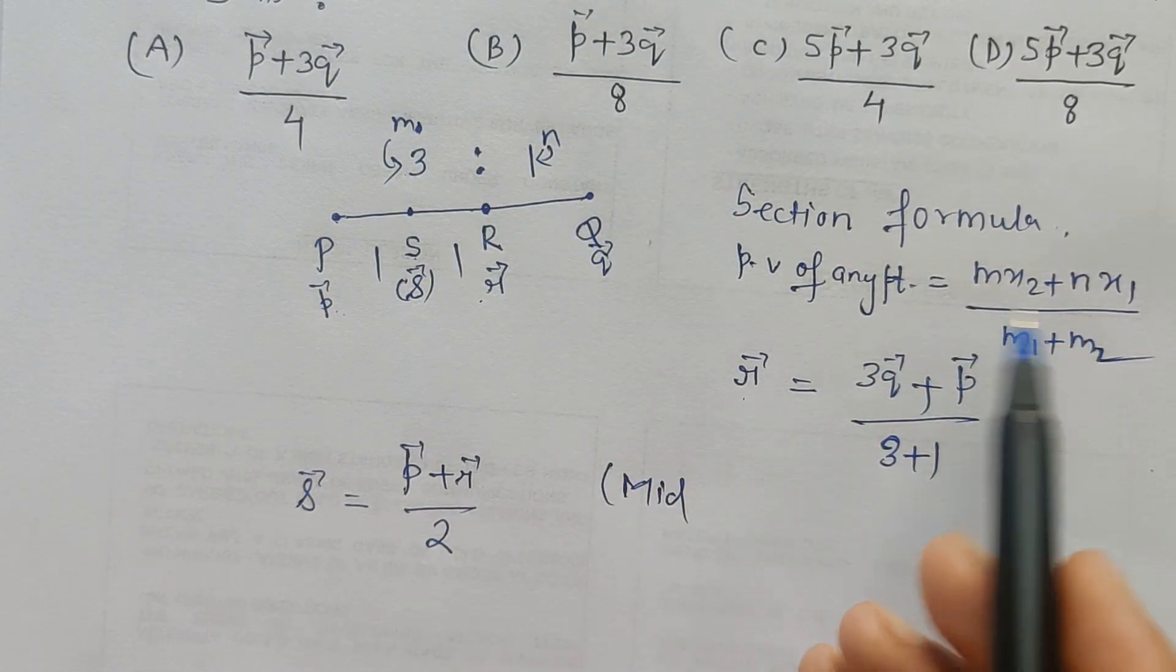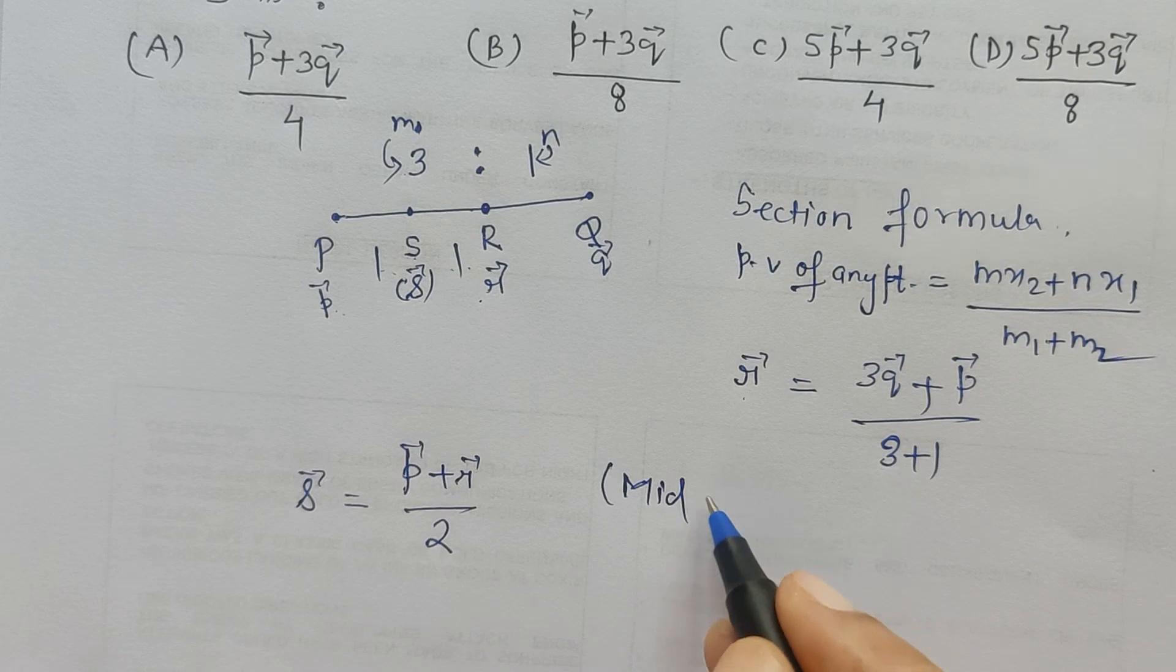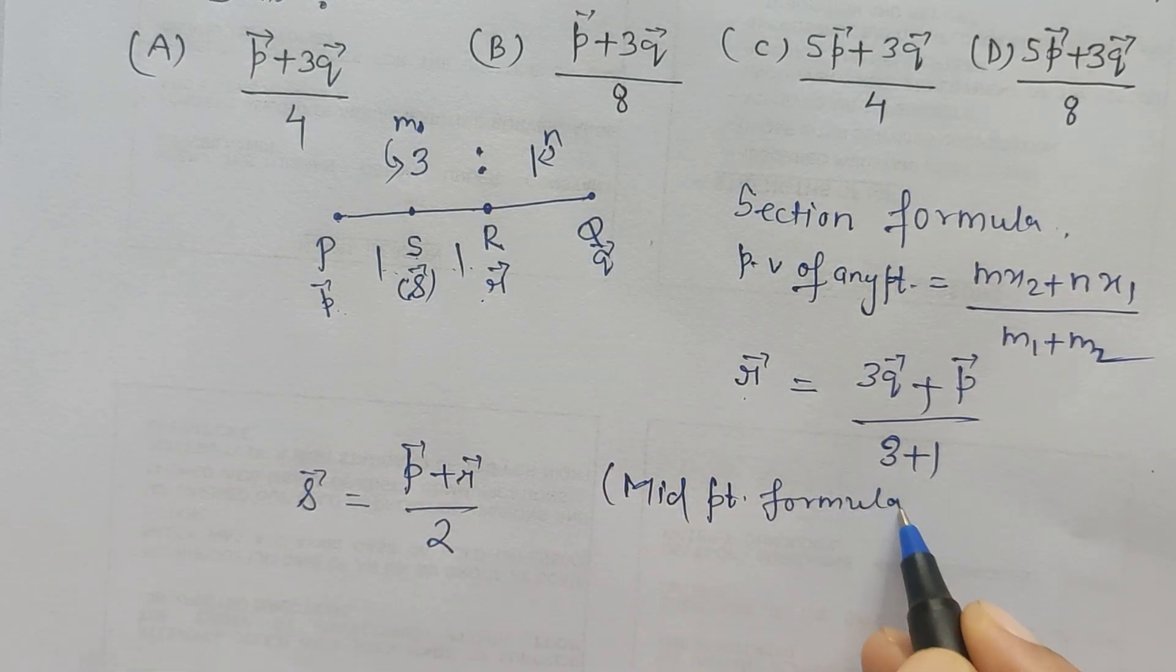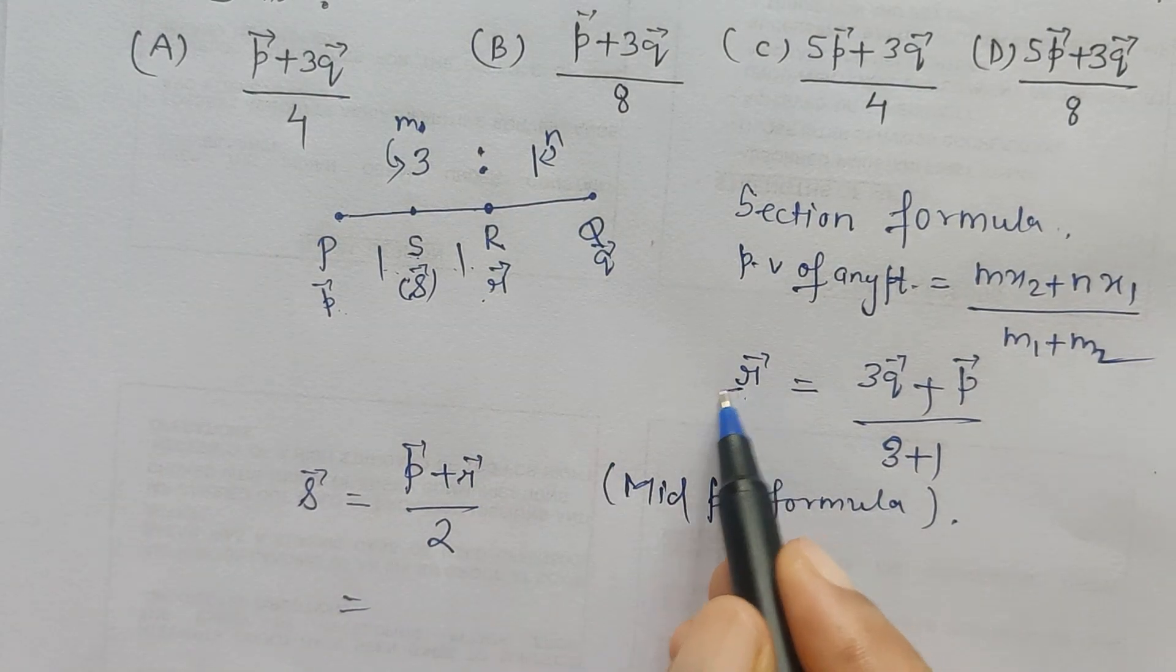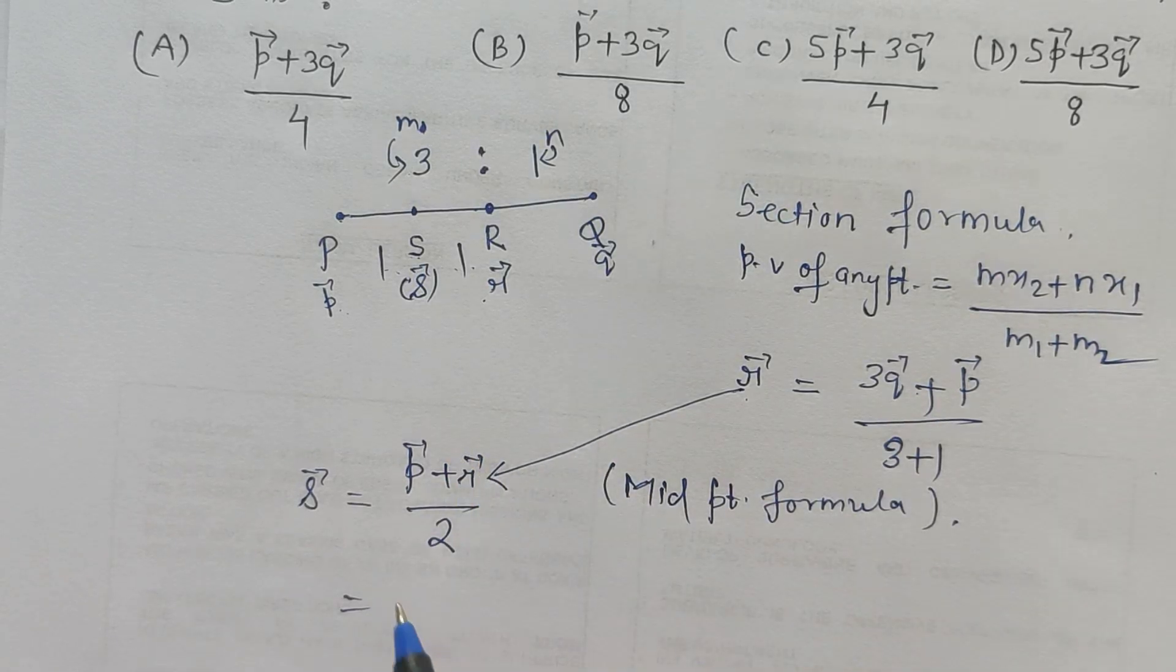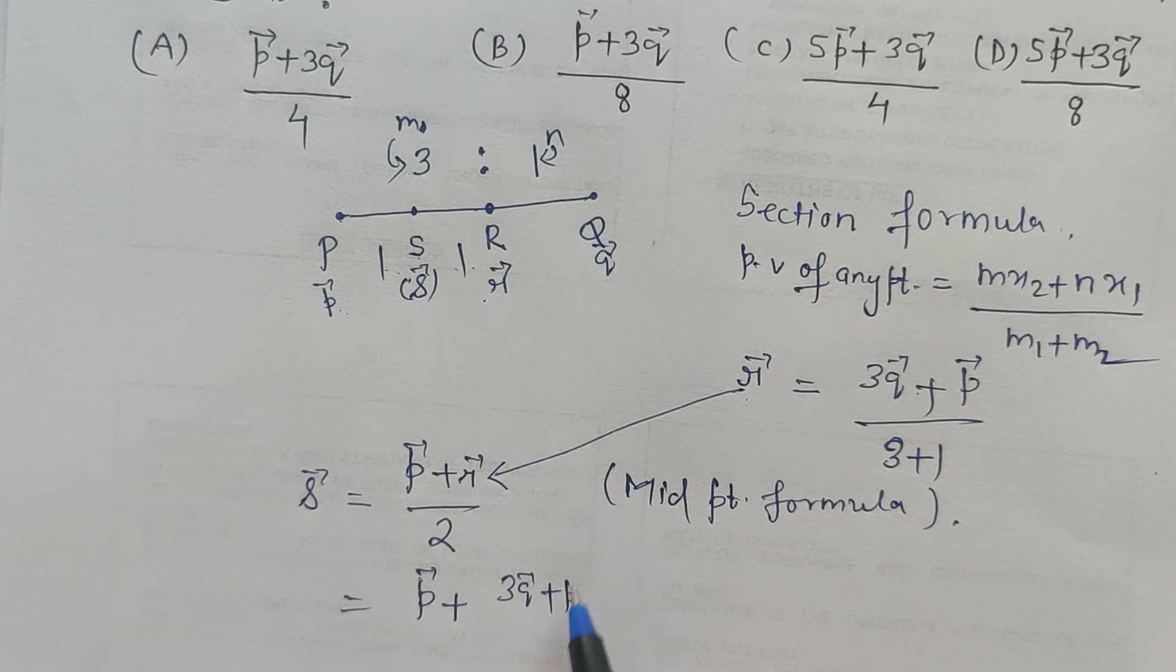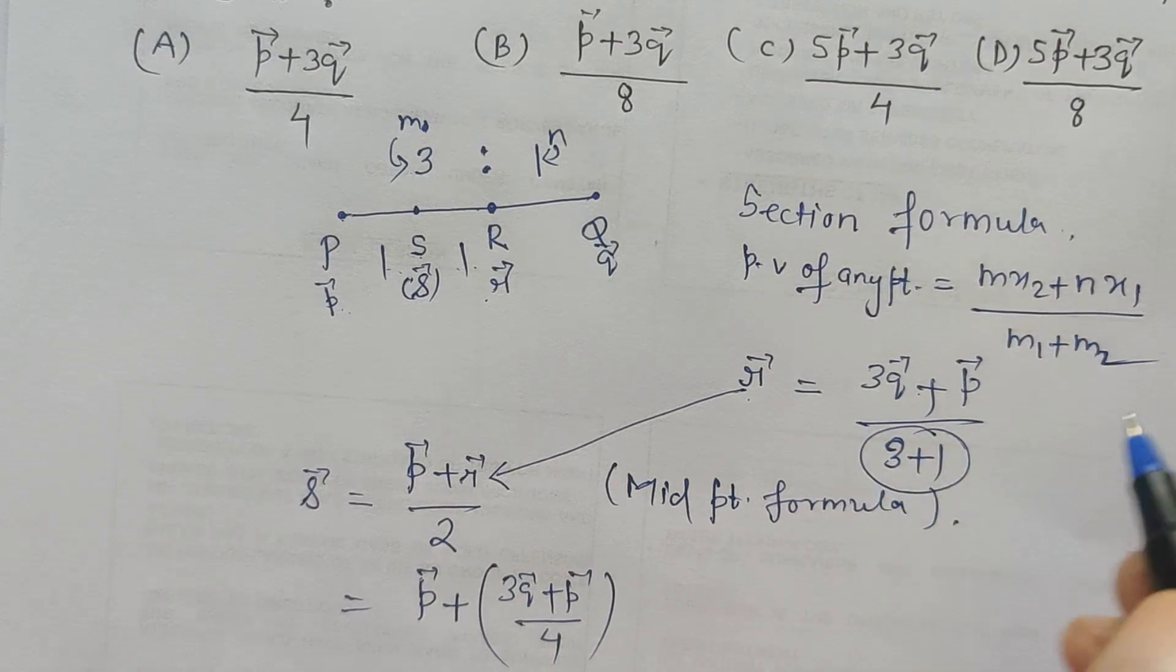Even if you use this I will get the same thing because the ratio is 1 is to 1. So it is using midpoint formula. So here as we know value of R from here so we can substitute this value in this place. So P vector plus R vector can be replaced by 3Q vector plus P vector upon 4. See 3 plus 1 is 4.